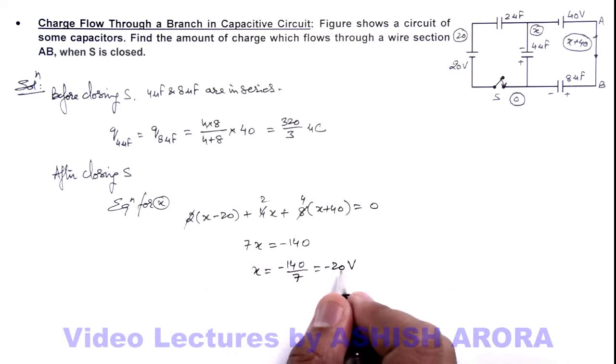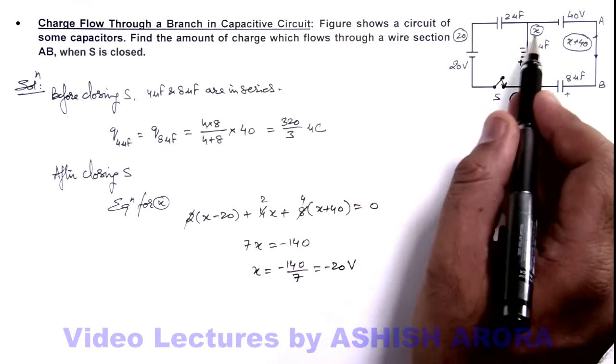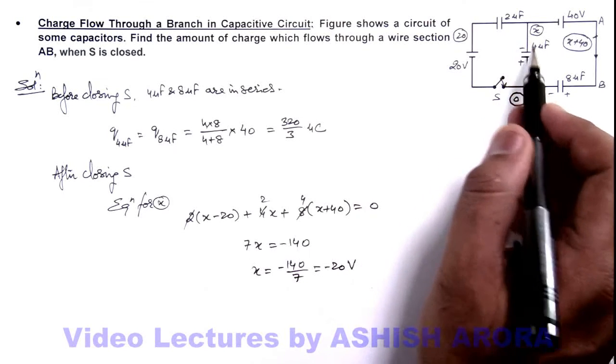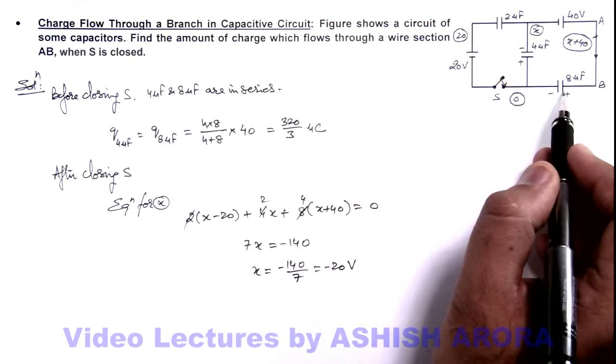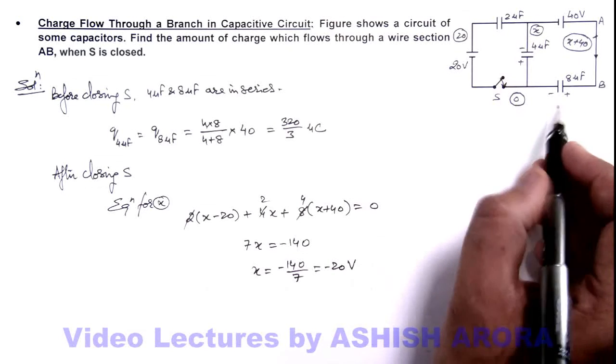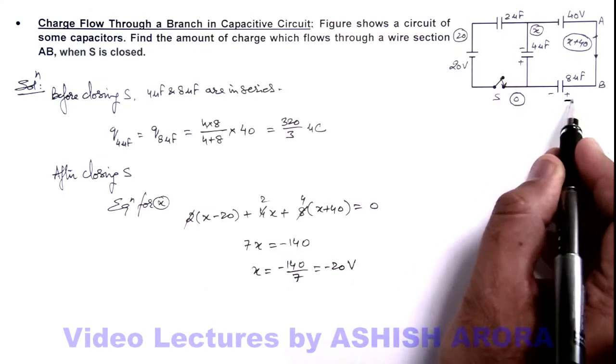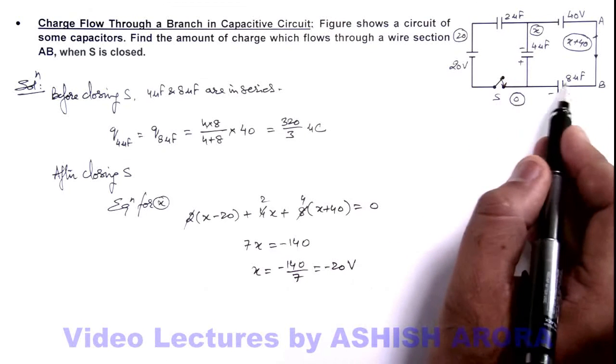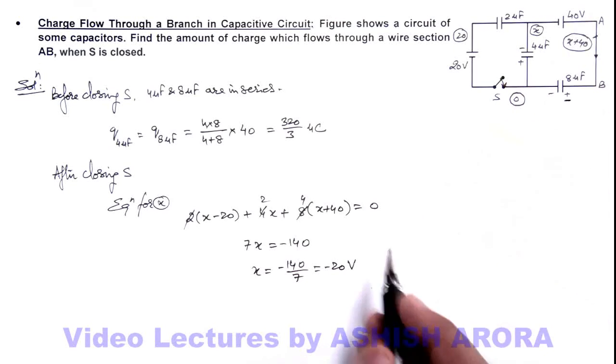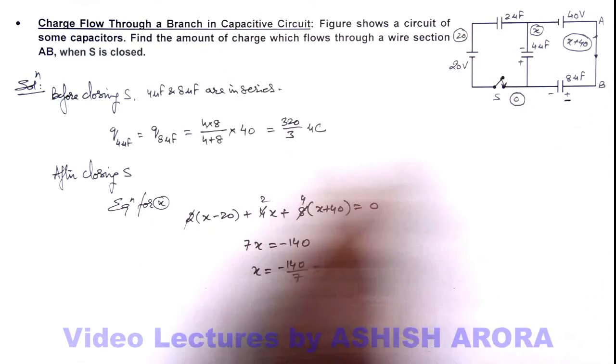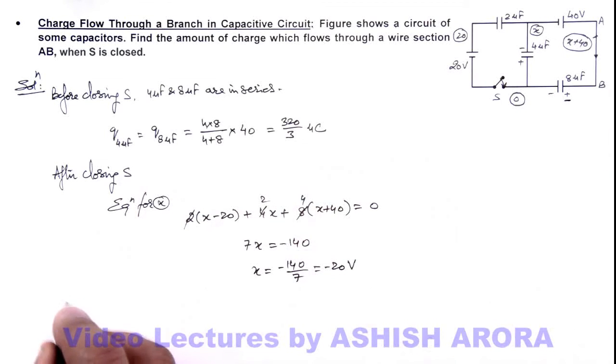So this is the final potential at node x. Correspondingly, we can calculate the charge on the 8-microfarad capacitor and find the difference of charges on this plate before and after closing the switch. That is the amount of charge which will flow through B to A, and the negative of which, from A to B, is what we need to find.